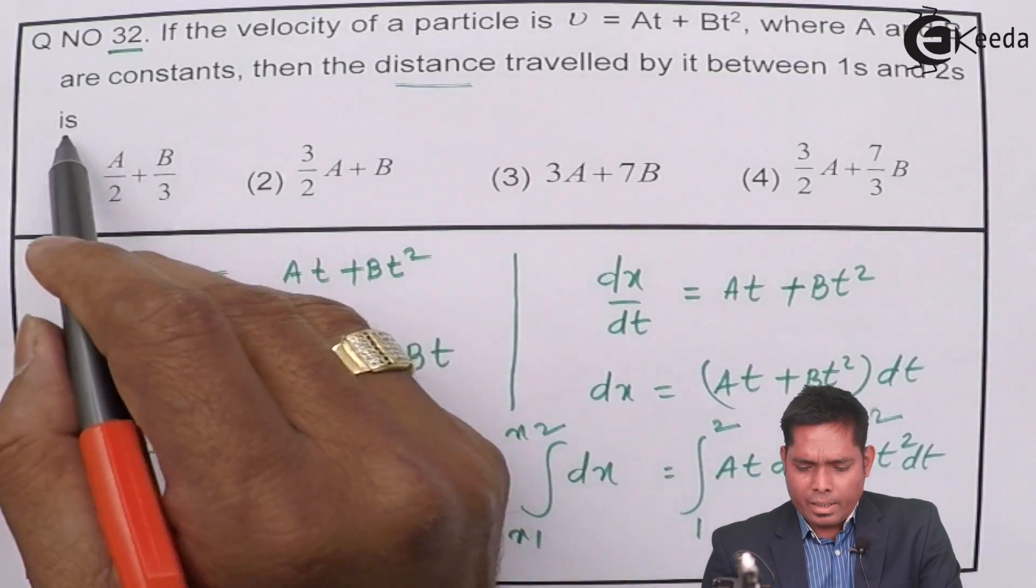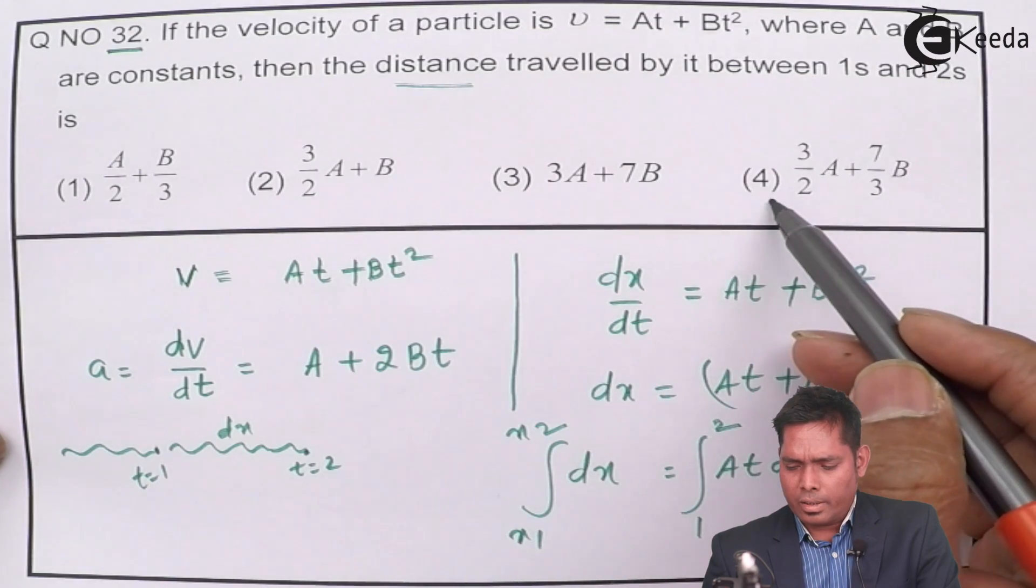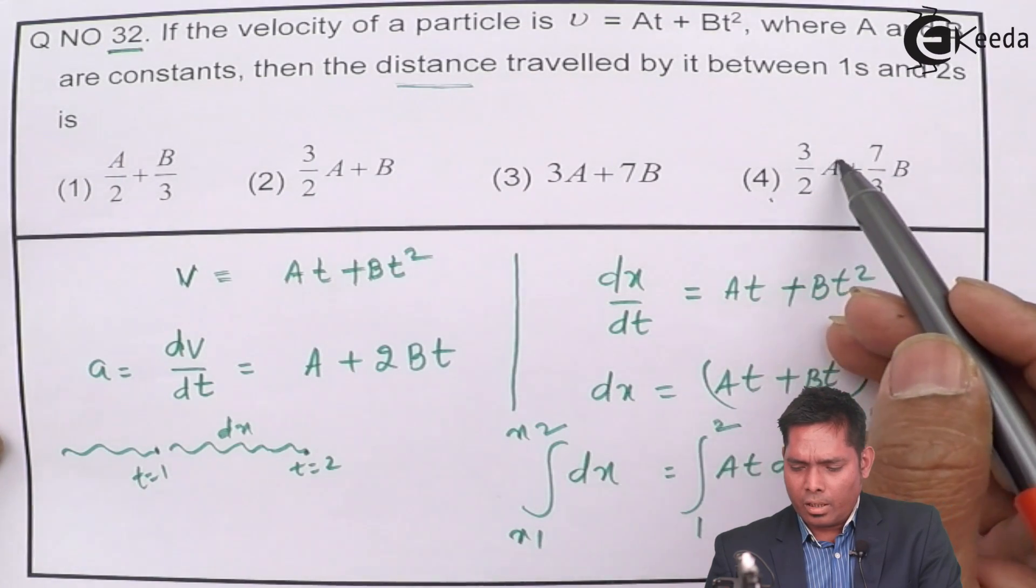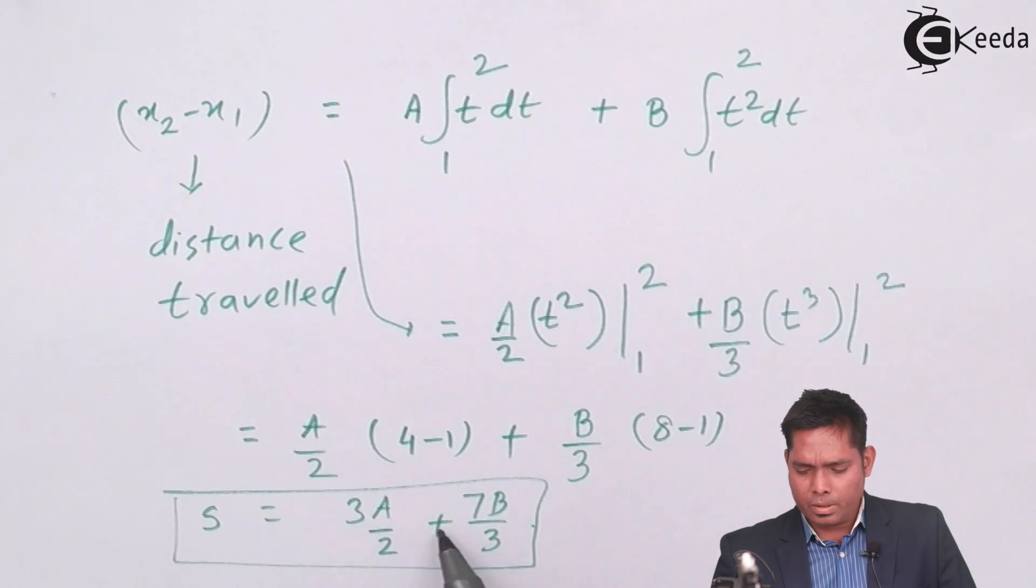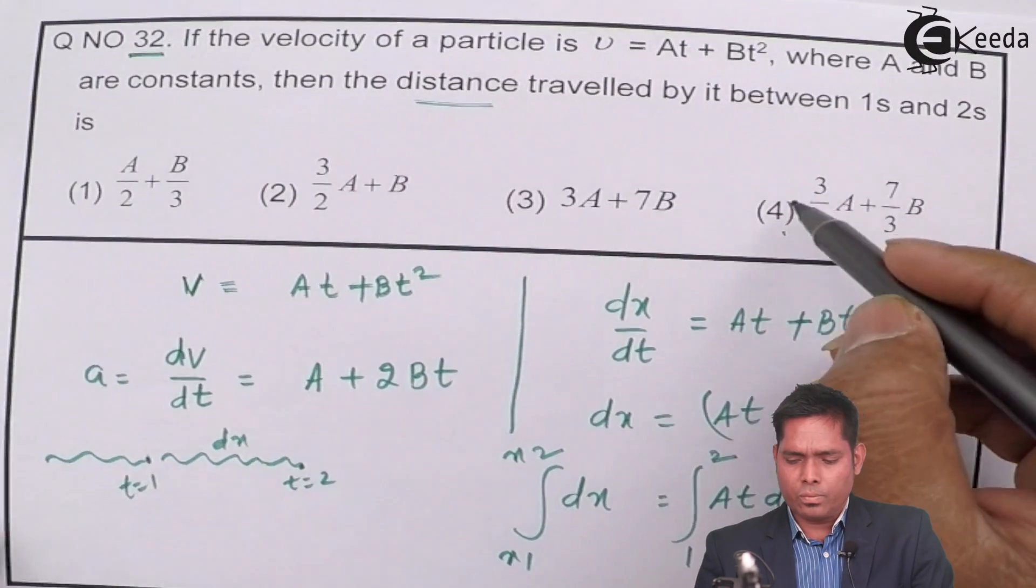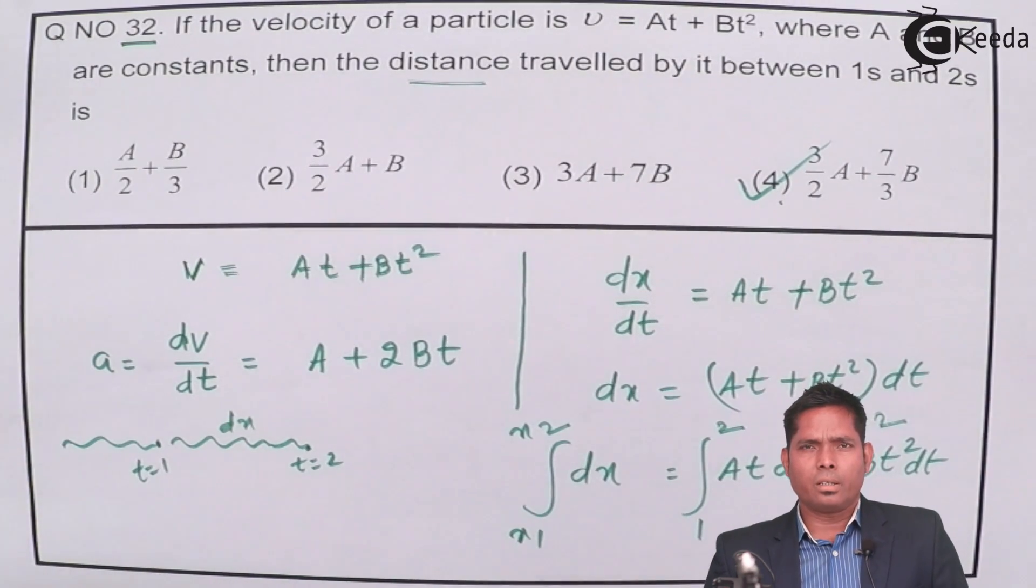Now, the question is to find that distance traveled, and if you see the options, then this one is the correct answer, 3A by 2 plus 7B by 3, so this fourth one is the right answer to this question. Thank you.